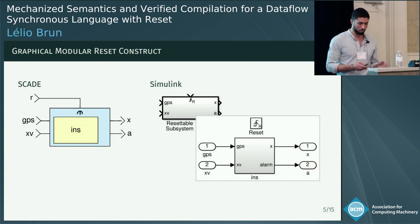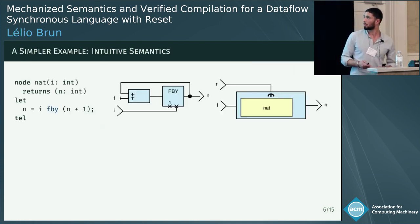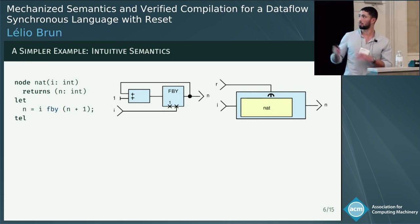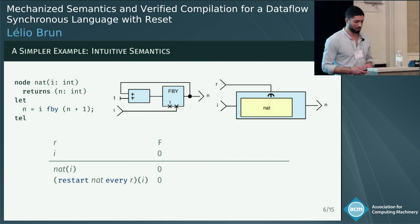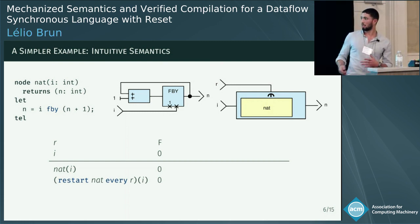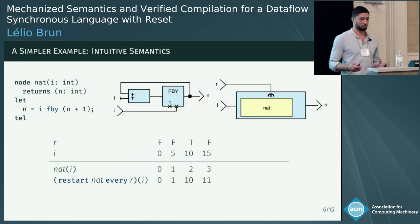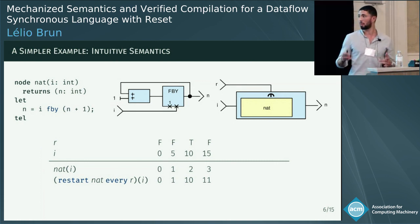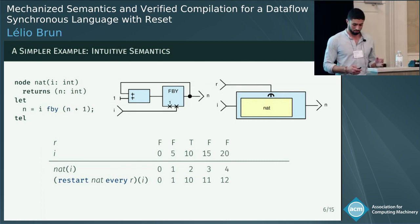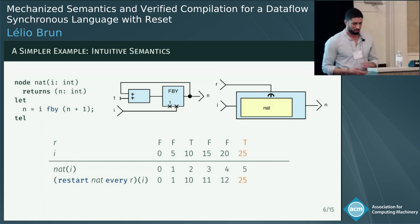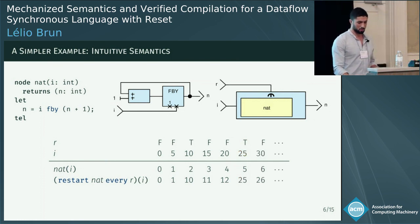We go through a simple example to give the intuition of the modular reset. This node outputs successive integers starting from i, and we compare the behavior with and without reset. Without reset, we start counting from 0, which is the initial value of i: 0, 1. Then there is a reset, so the follow-by is re-initialized to the current value of i, that is 10. We resume counting from 10: 11, 12. Then there is another reset, so 25, 26, and so on.